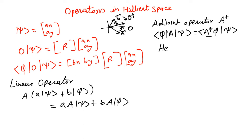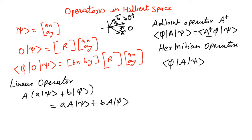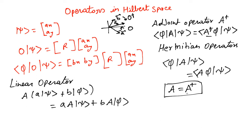Also, within adjoint operators, there are certain types called Hermitian operators, and they satisfy the following condition. When we write it like this, it basically means A is operating on psi, and we can write this as A phi, where A is operating on phi instead of psi. Either there are two lines or just one line — that's the way we have chosen to write it. For this particular case, the adjoint of the operator is the same as the operator itself, and these kinds of operators are called Hermitian operators.